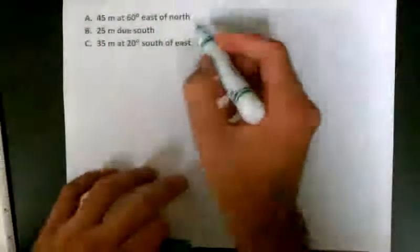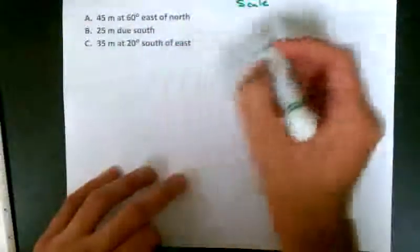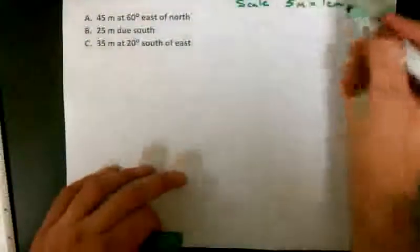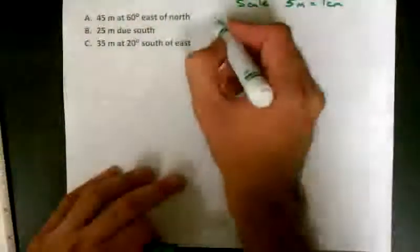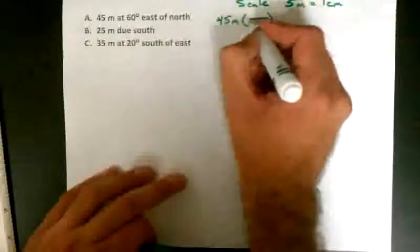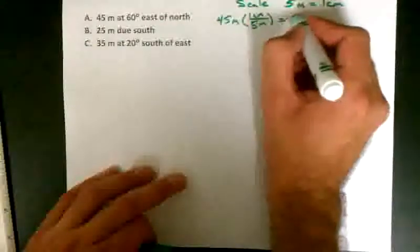The first thing we'll need to do is make a scale so that these vectors will fit on the page. I'm going to make 5 meters equal to 1 centimeter on my page. So 45 meters, when converted out of meters into centimeters, will be 9 centimeters.